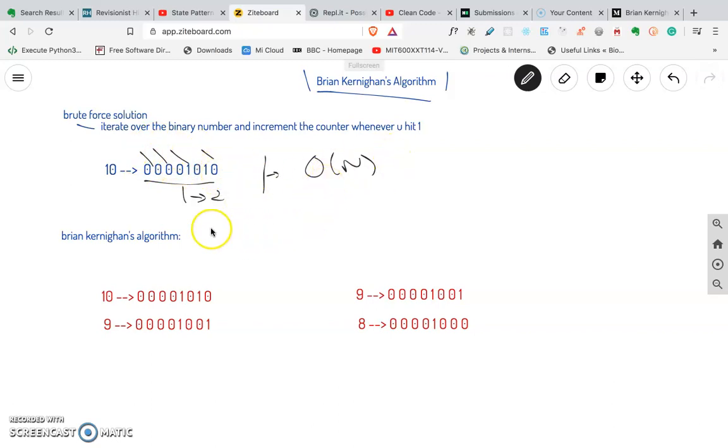Whereas in the case of Brian Kernighan's algorithm, the time complexity is big O of k, where k is number of set bits. So in this case it will be just two.